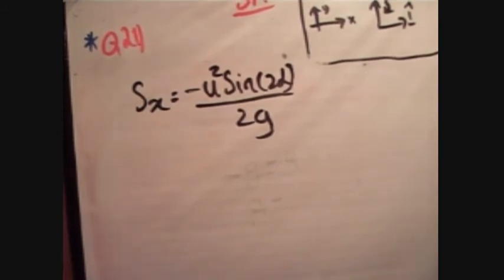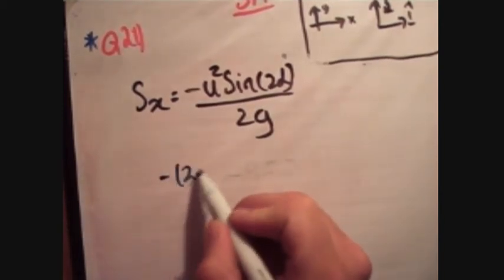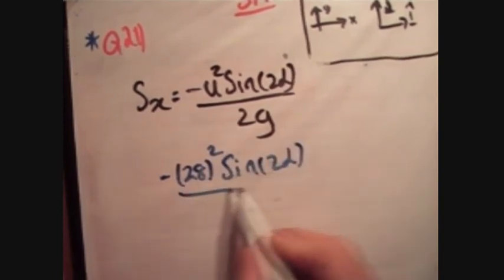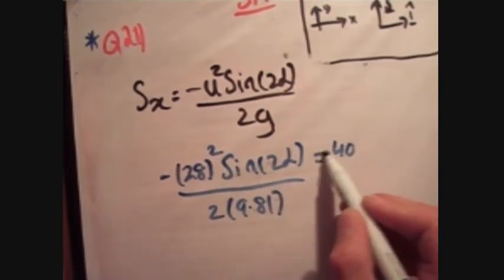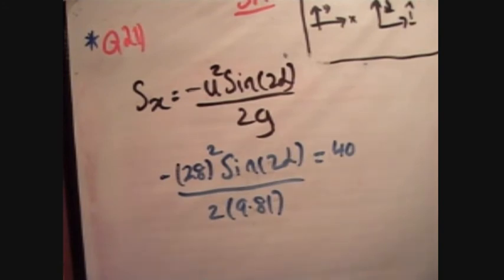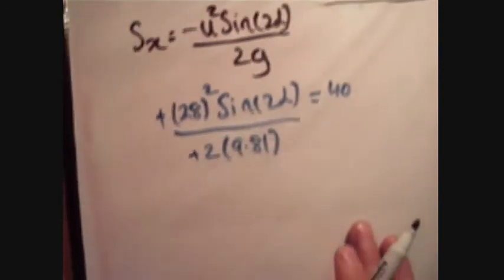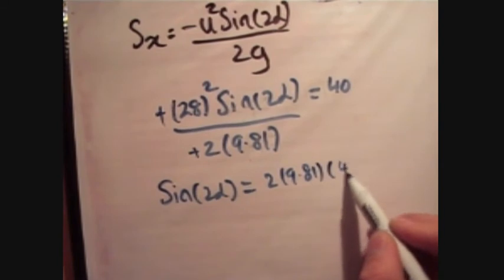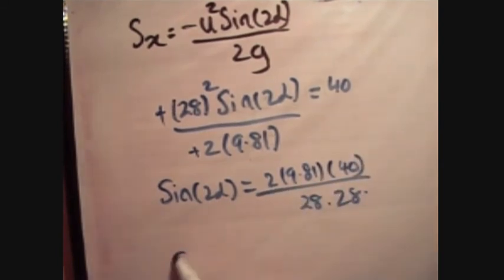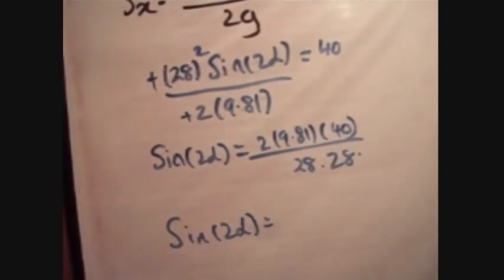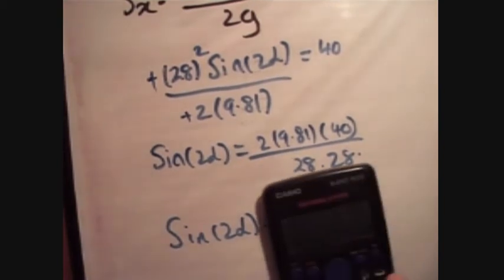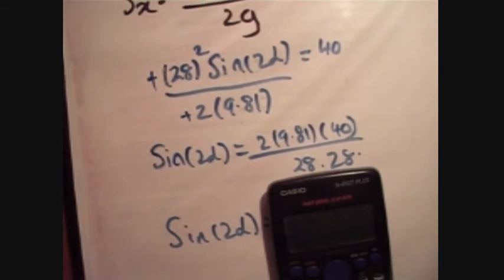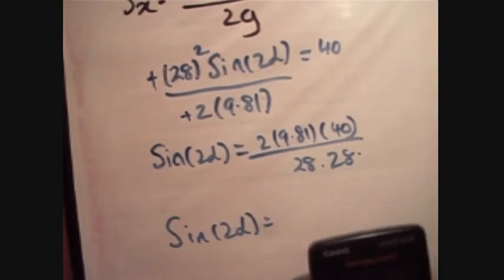So what do we know in this? We know that u is equal to 28, so we get minus 28 squared sine 2 alpha over 2 times 9.81 is equal to 40, like so. Let's just bring all those, well, that's minus again, by the way. That becomes plus, so we get sine of 2 alpha is equal to 2 times 9.81 times 40 over 28 squared, like so. So sine 2 alpha is equal to.